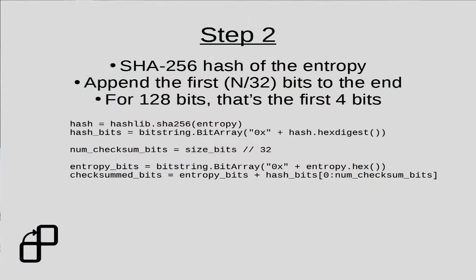The next step is we need to create a checksum. We take the SHA-256 hash of the entropy and append the first n divided by 32 bits to the end of that randomness. So for 128 bits, we're going to add a 4-bit checksum. In Python, it's really easy to get a cryptographic hash using the hashlib functionality — we can use hashlib.sha256. When we're dealing with these bits, we're using a lot of weird sizes in this algorithm, and it's kind of hard to do things at the bit level instead of the byte level.